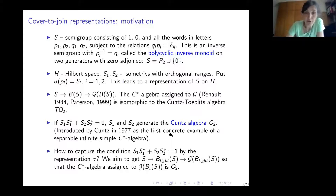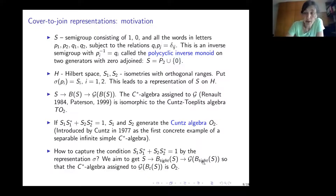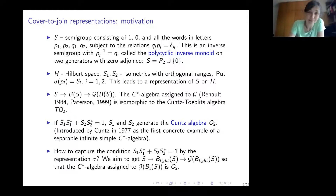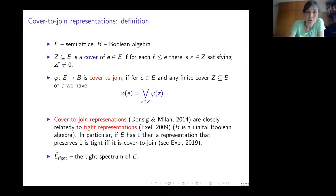Booleanization is not the right object to obtain the Cuntz algebra O₂ — we need something different. The aim is to get a new Boolean inverse semigroup, not the Booleanization but something else, and then get a dual étale groupoid so that O₂ is the attached C*-algebra. The answer is the tight Booleanization B_tight(S), or equivalently the tight groupoid of S.